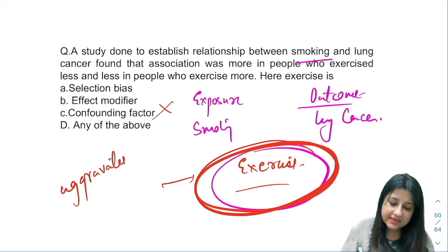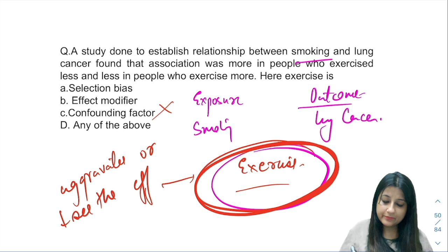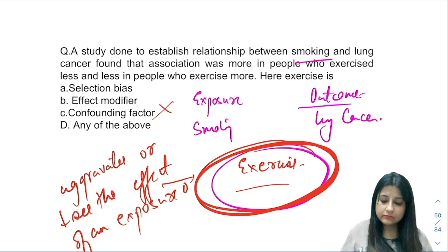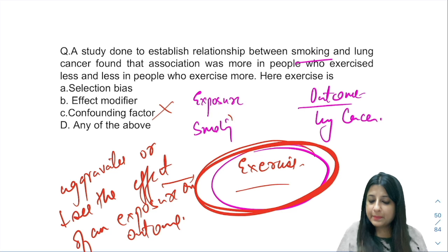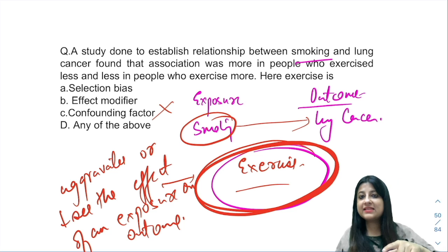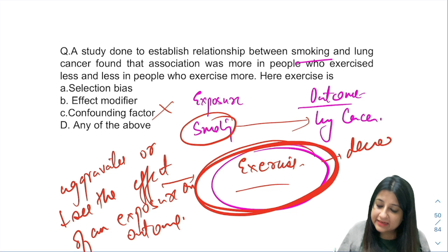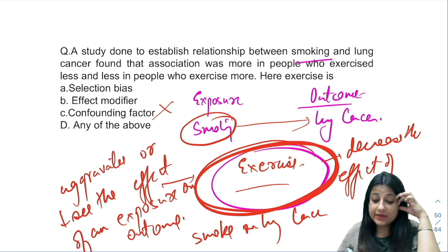An effect modifier is a variable that either aggravates — that is, increases — or decreases the effect of an exposure on the outcome. People who smoke have a risk of lung cancer, but if those people who are smoking are also exercising, exercise will decrease the effect of smoking on lung cancer.